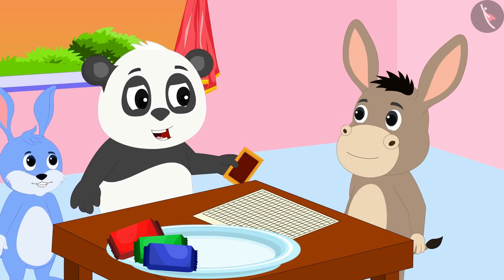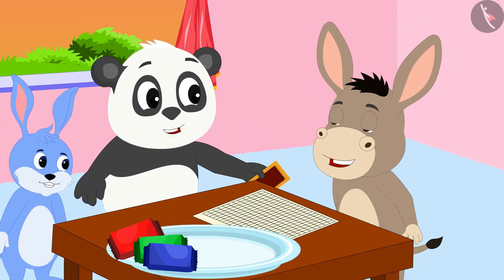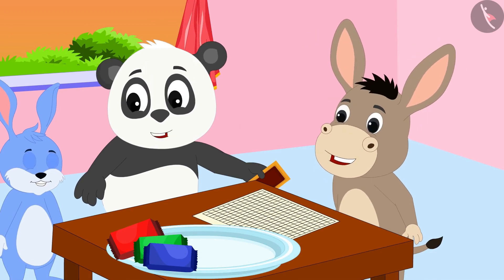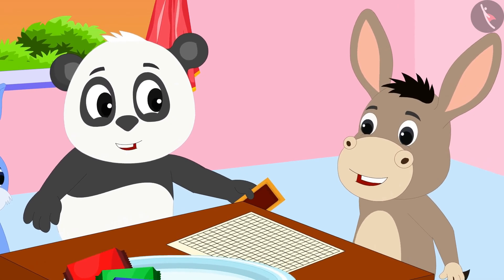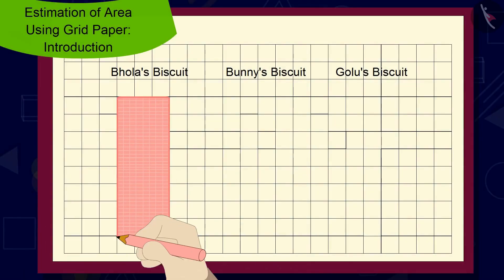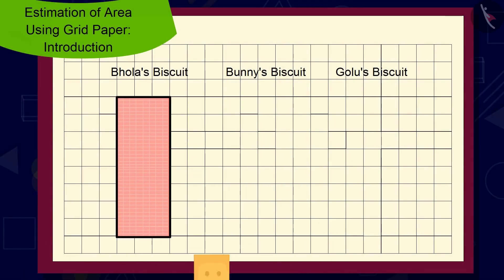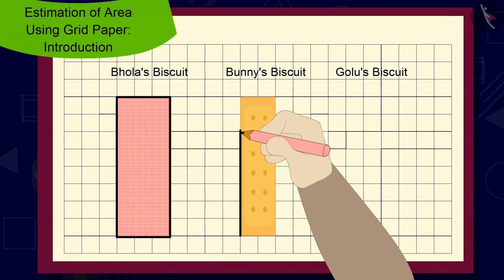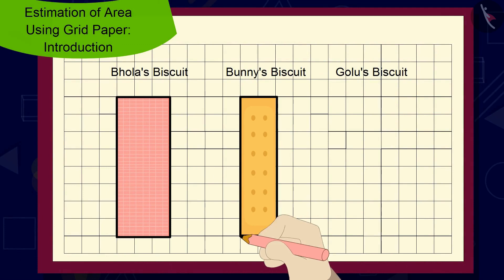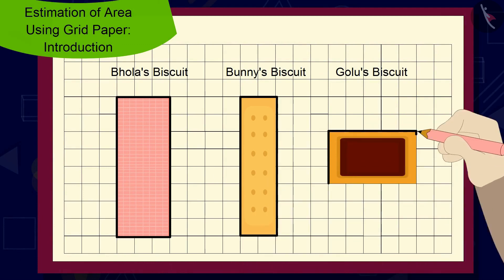But Bhola, how can we use this to find out the biggest biscuits? Golu asked Bhola. Bhola made the outlines of those three biscuits with a pencil on the grid paper.